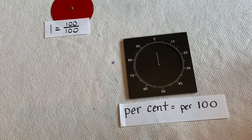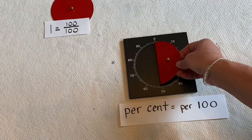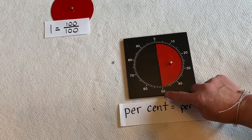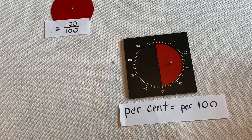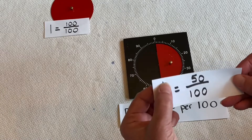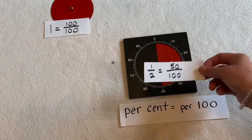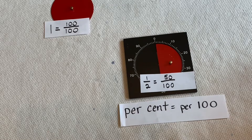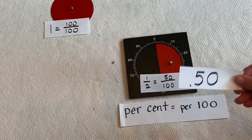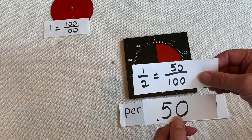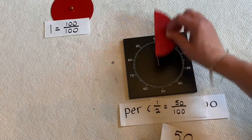Let's try our half. Here is our 1 half. I can place it in here, and now it is taking up 50 of the parts. So that is our 1 half — it's our 1 half fraction. It's taking up 50 hundredths. 50 hundredths can also be written, as you all know now, like that. 50 hundredths — here are three different ways to write the same thing.